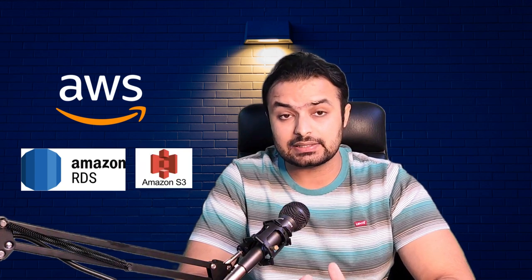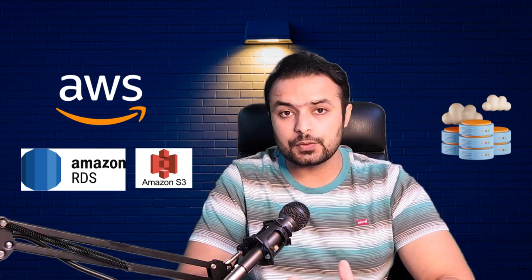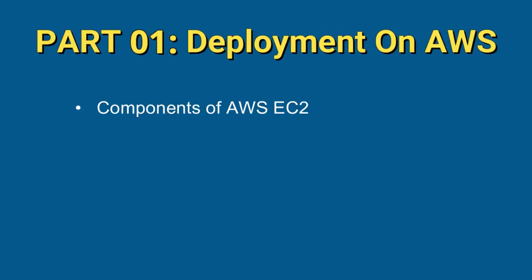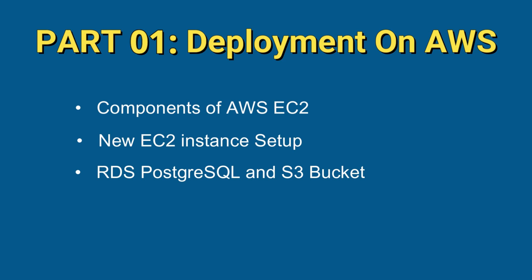In this section, we will discuss how to deploy our code on AWS EC2 with RDS and S3. AWS is a popular cloud hosting platform. We will go over the different components of AWS EC2 and how to set up a new instance. We will also learn how to configure RDS, S3, Gunicorn, and Nginx for server configuration. In this last section, we will learn how to set up domain and SSL certificate for our project.